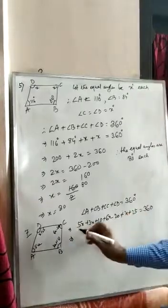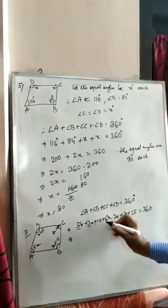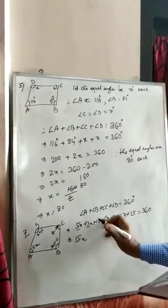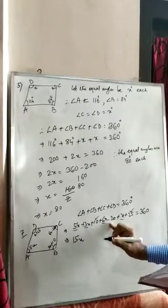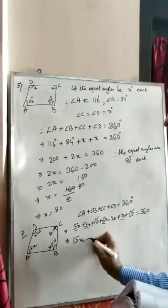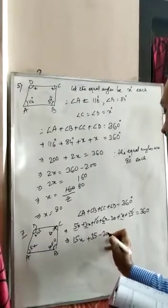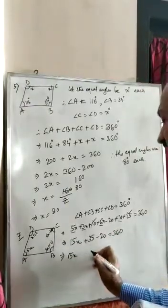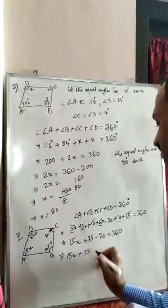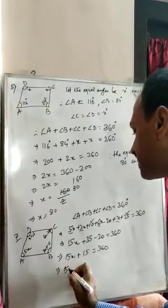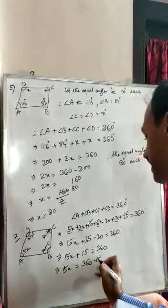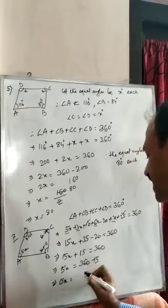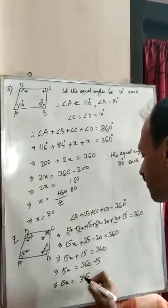Adding the X terms: 5X + 3X + 6X + X = 15X. Adding the constants: +10 + 25 − 20 = +15. So 15X + 15 = 360, which gives 15X = 360 − 15 = 345.